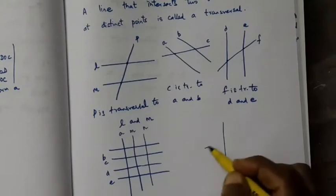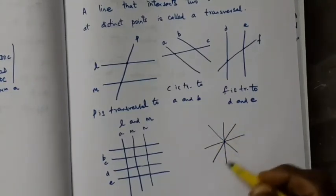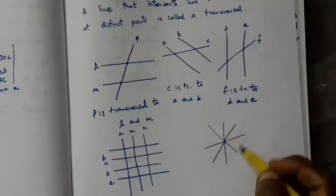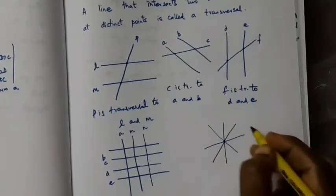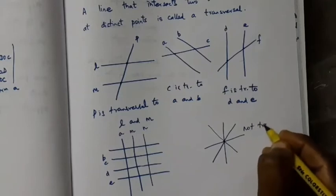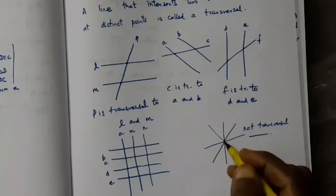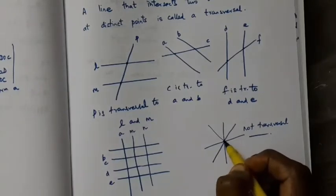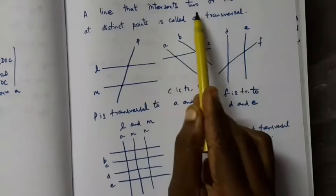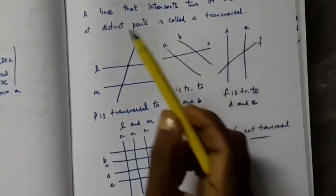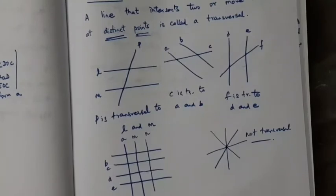There is another example where many lines meet at a common point. This is not a transversal because all these lines are meeting at a single point. To be a transversal, a line must intersect two or more lines at distinct points — only then can we call the line a transversal.